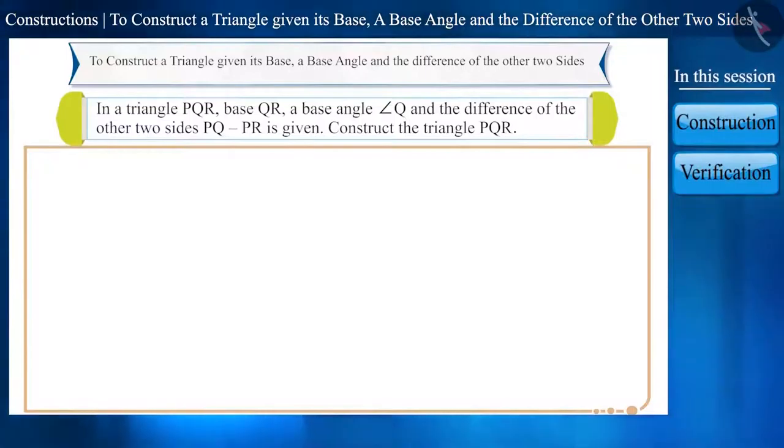For example, suppose we have to construct a triangle PQR, the length of whose base side QR is given, the measure of the base angle Q is given, and the difference of the other two sides PQ minus PR is given.